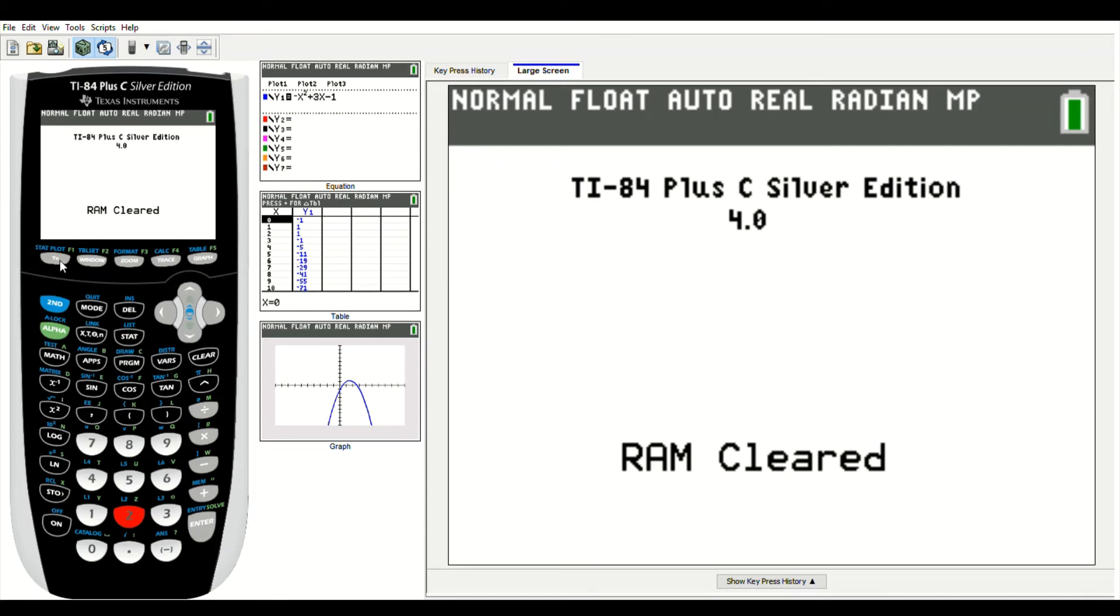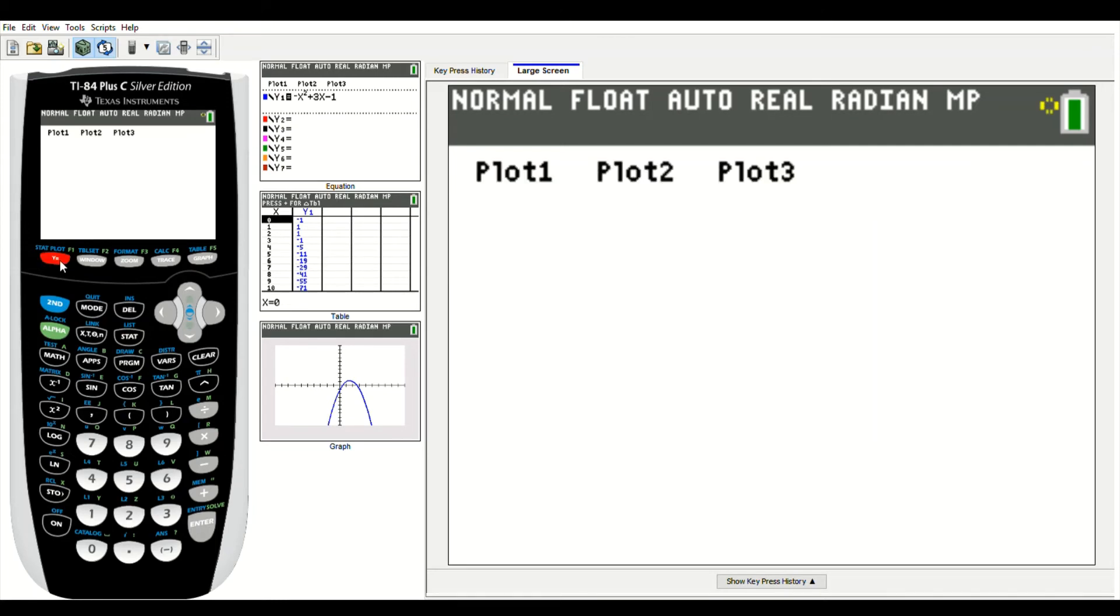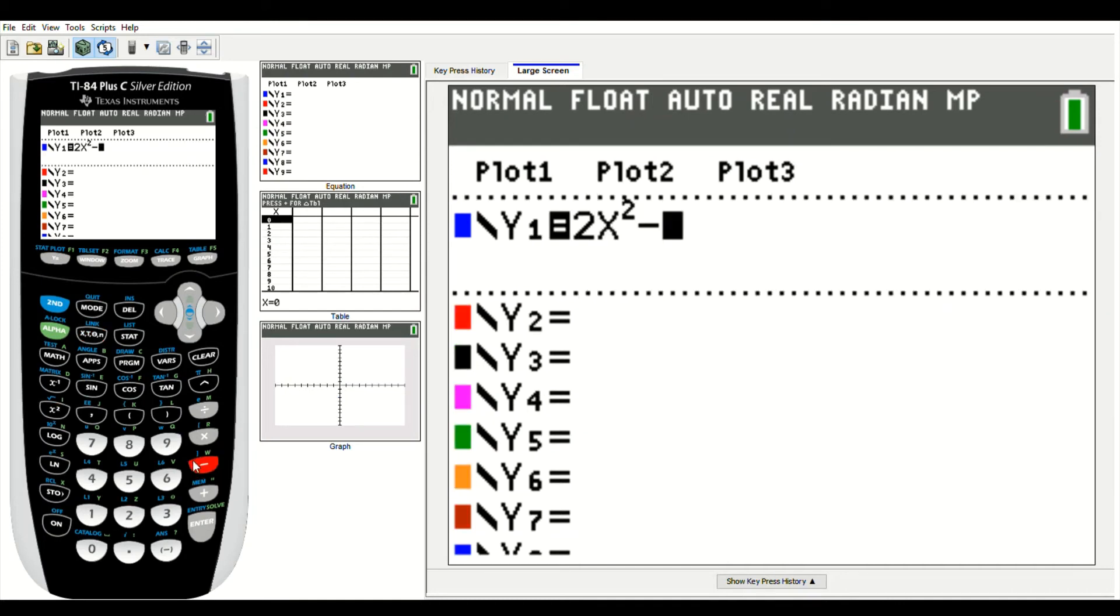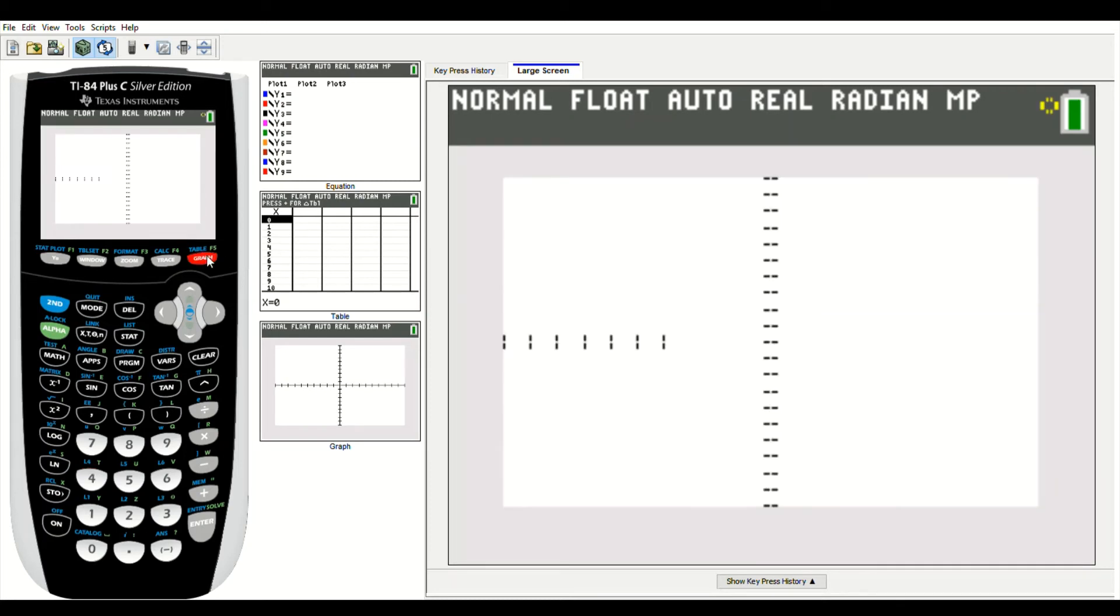So we're first going to plug in a quadratic function into Y equals. So I'm going to go to Y equals, and I'm just going to type in 2x squared minus 3x and then minus 4. So 2x squared minus 3x minus 4. We're going to graph it.